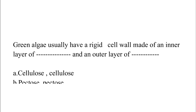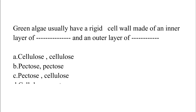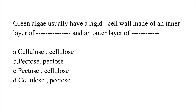Green algae usually have a rigid cell wall made of an inner layer of dash and an outer layer of dash. Option A: Cellulose, Cellulose. Option B: Pectose and Pectose. Option C: Pectose and Cellulose. Option D: Cellulose and Pectose. The correct answer is Option D, which is Cellulose and Pectose. Green algae usually have a rigid cell wall made of an inner layer of cellulose and an outer layer of pectose.